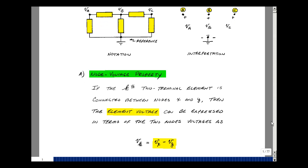Once we know the node voltages in a circuit we'll be able to find the voltages across any element. This is called the node voltage property.